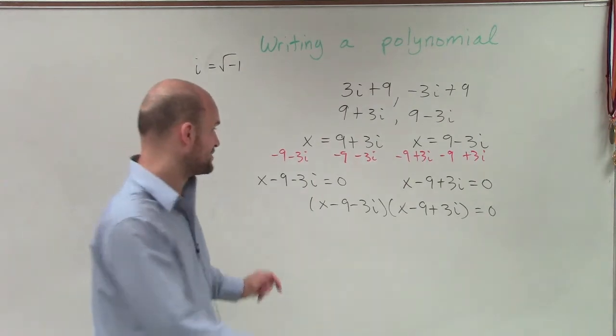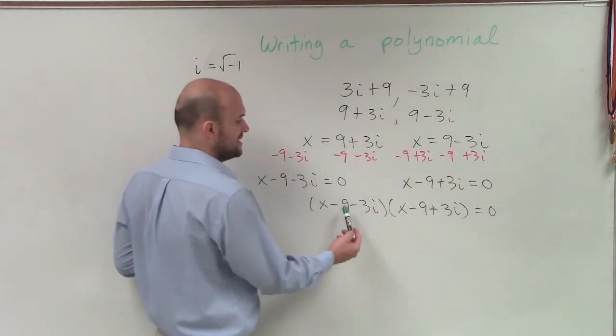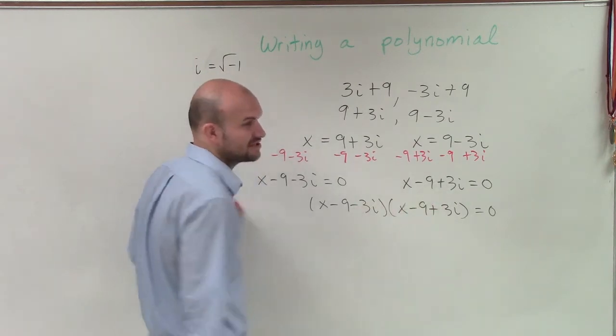I'll say you have to be very, very organized and very detailed, or you're really bound to make a mistake. Because you're going to have to multiply x times each one of these terms, negative 9 by each one of these terms, and negative 3i times each one of these terms.